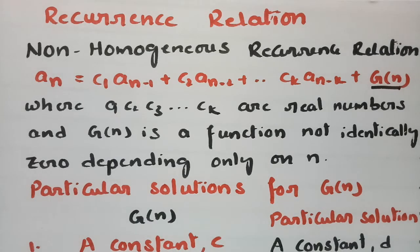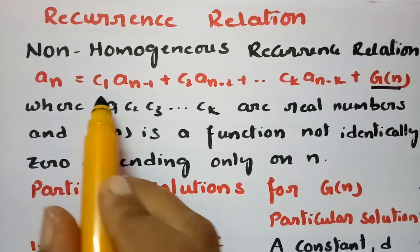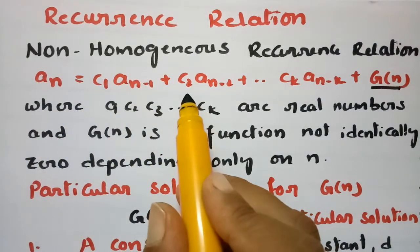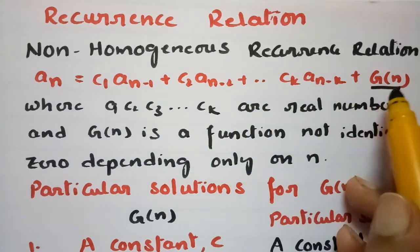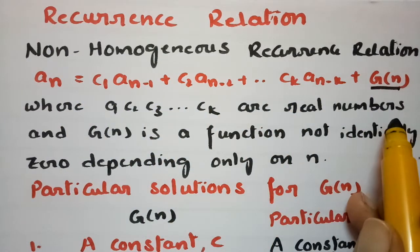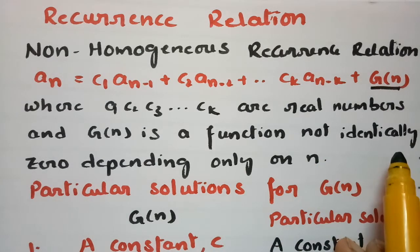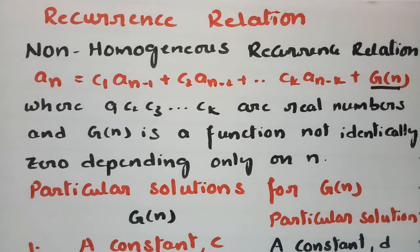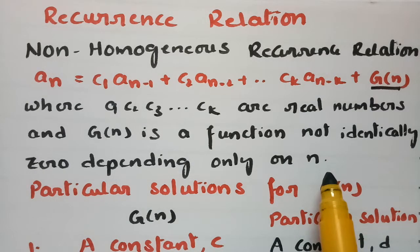In today's video I am going to explain what is a non-homogeneous recurrence relation. Any equation of the form aₙ = c₁aₙ₋₁ + c₂aₙ₋₂ + ... + cₖaₙ₋ₖ + g(n), where c₁, c₂, ..., cₖ are real numbers and g(n) is a function not identically zero depending only on n, is called a non-homogeneous (or inhomogeneous) recurrence relation.